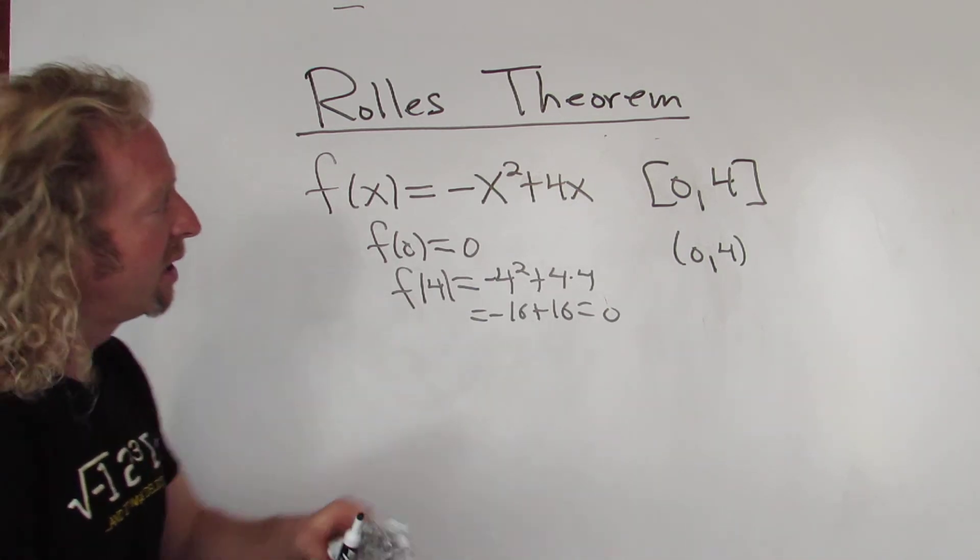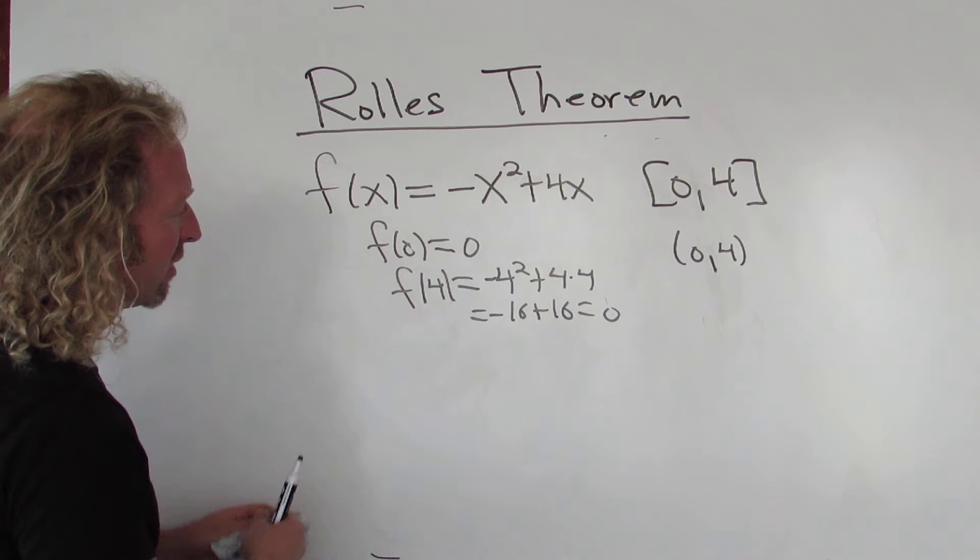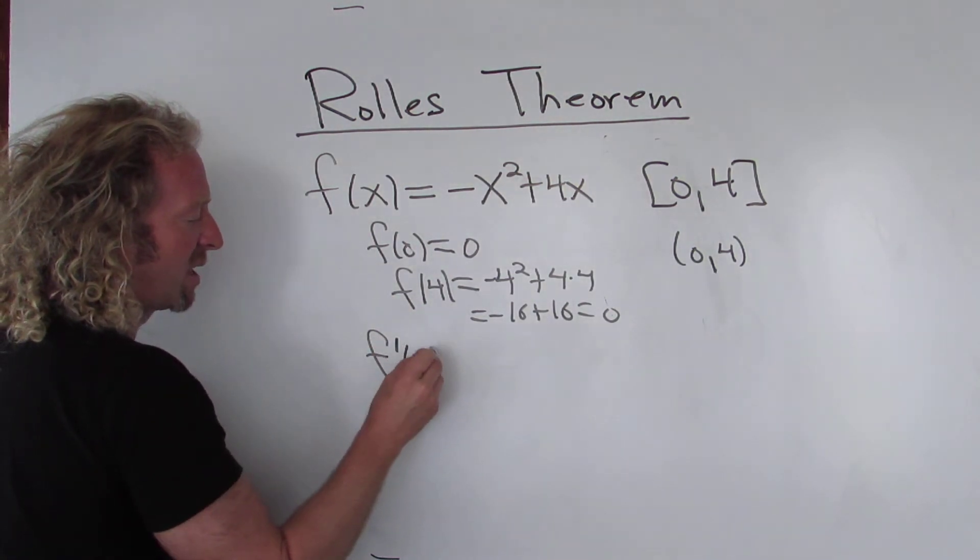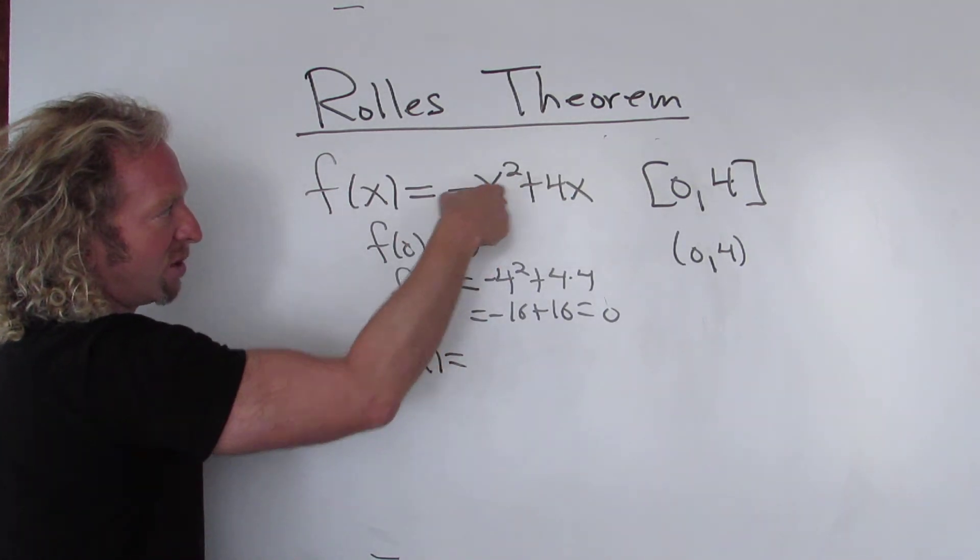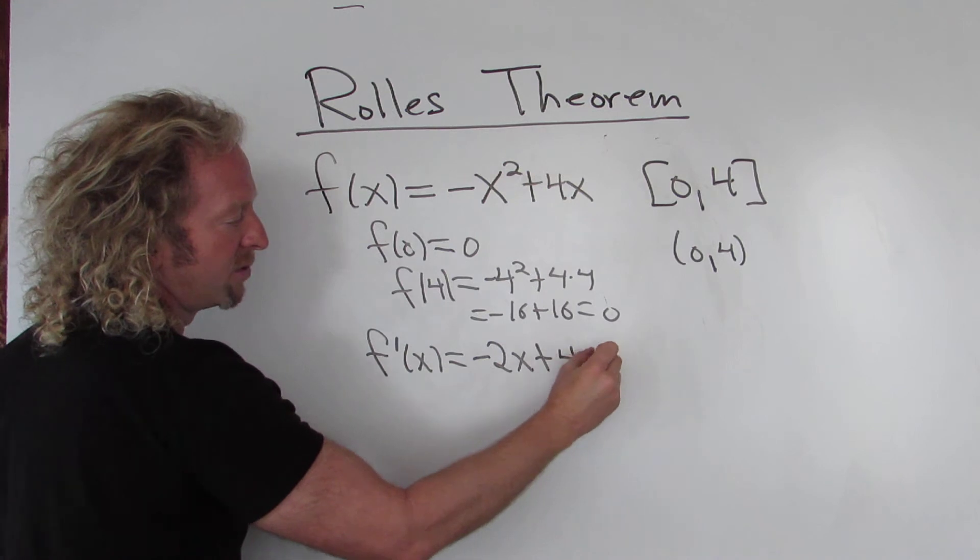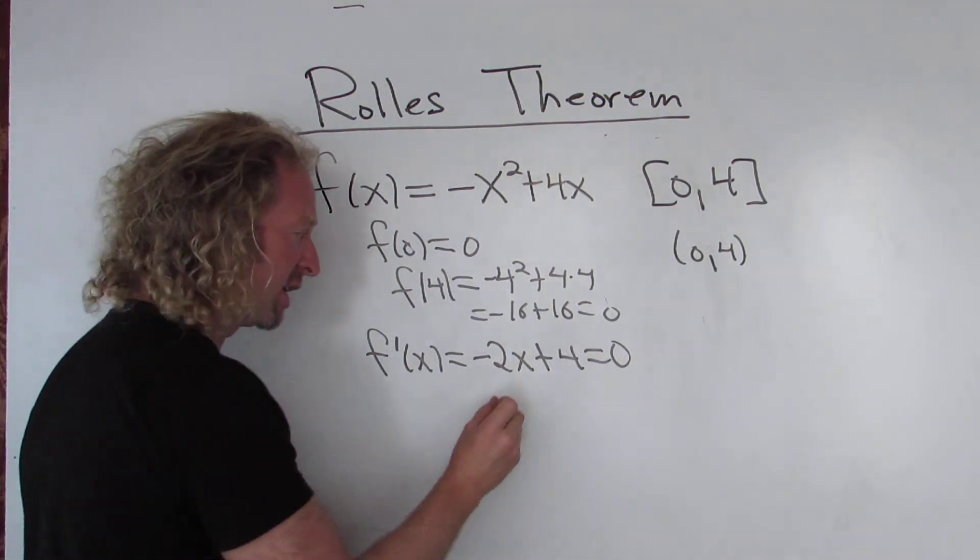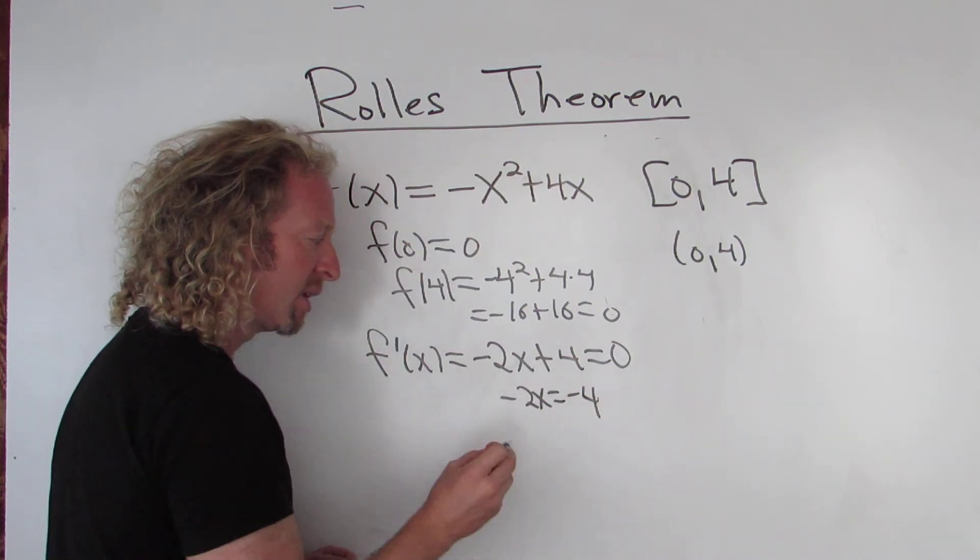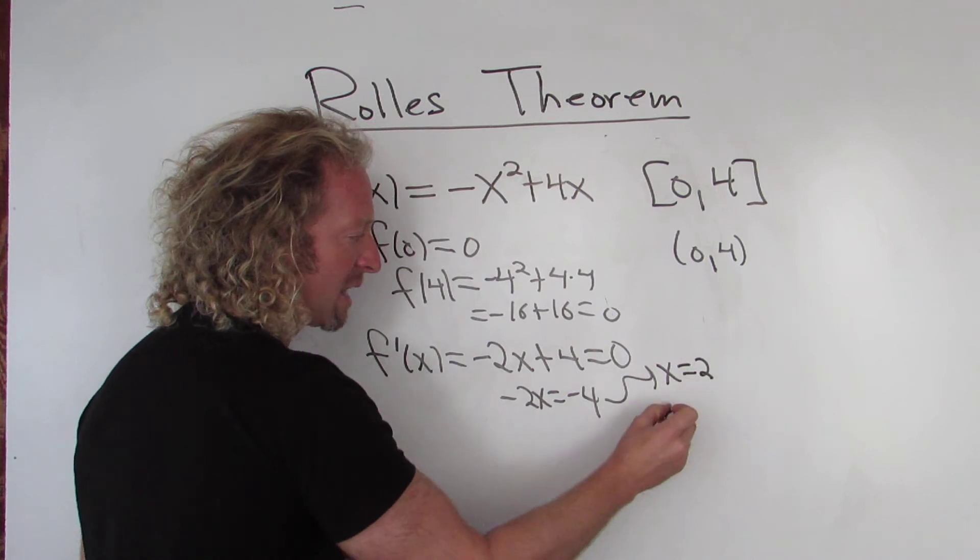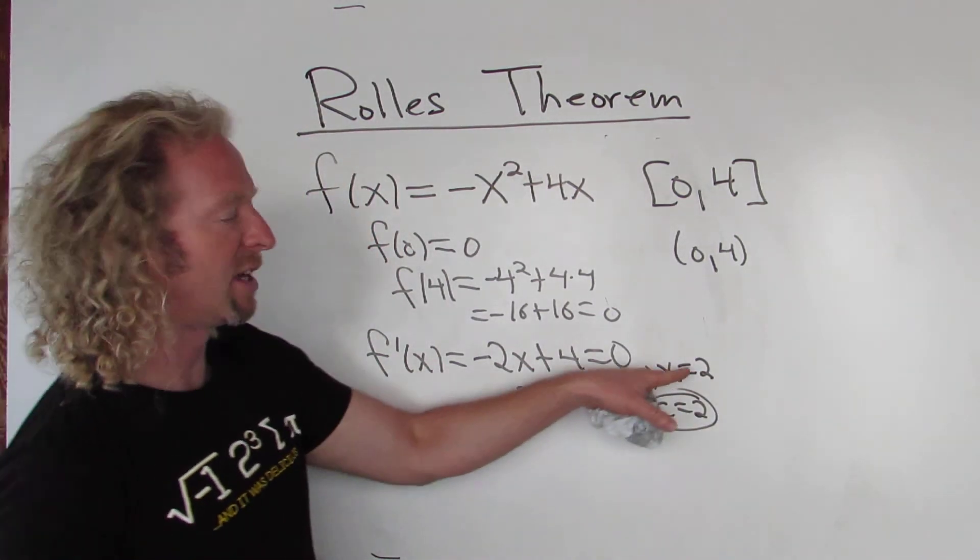So there is a number in this open interval where the derivative is 0. Let's find that number. So to find that number, you would take the derivative and set it equal to 0. This is a pretty easy derivative. You just use the power rule. So negative 2x plus 4, and you set it equal to 0. Then just subtract the 4. So you get negative 2x equals negative 4. And then divide by negative 2, so you get x equals 2. So that would be the value of c. Dividing by the negative gives you a positive.